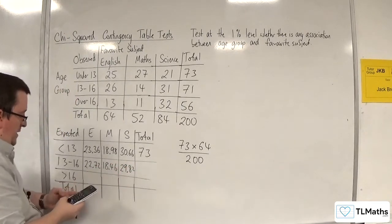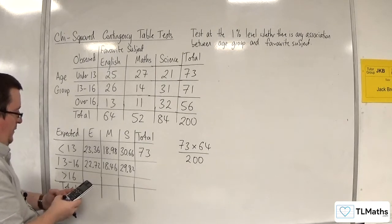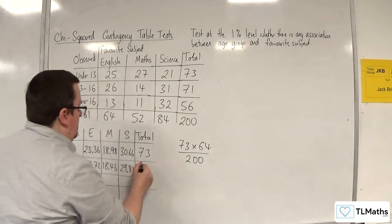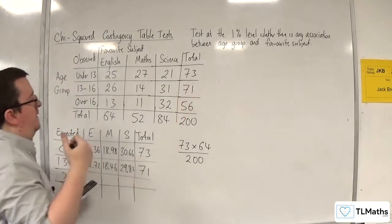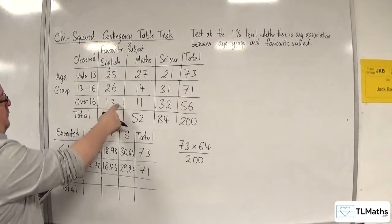Right, let's add those three together. 18.46 plus 22.72. And we get 71, which corresponds with that number there. Excellent.